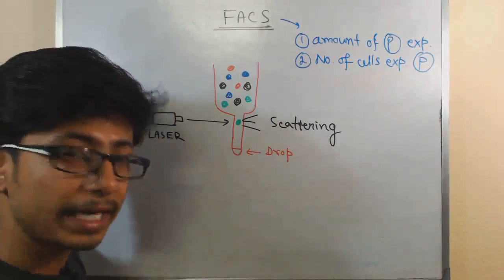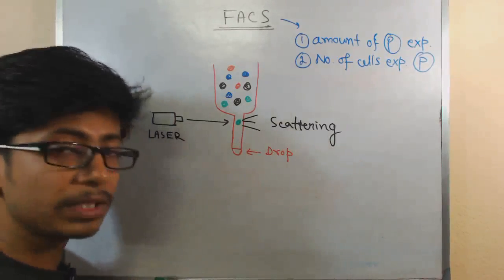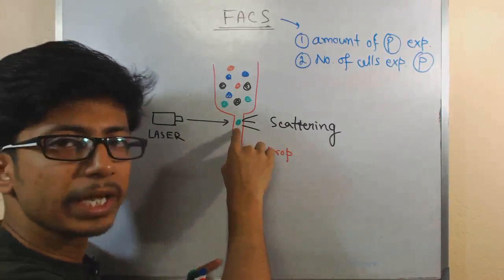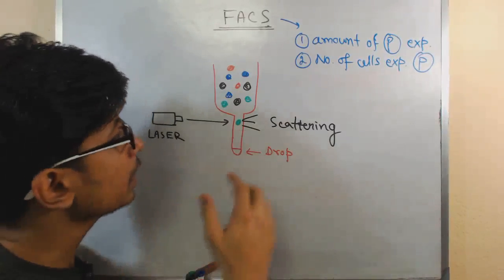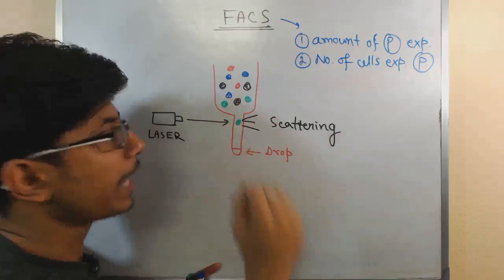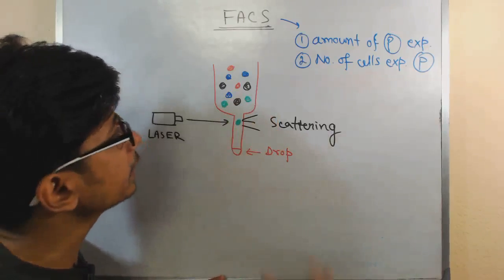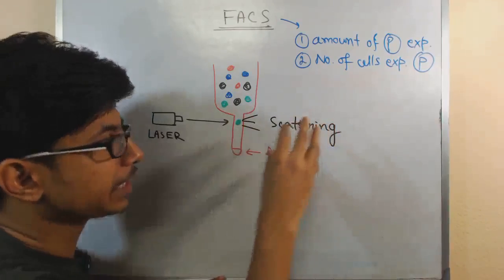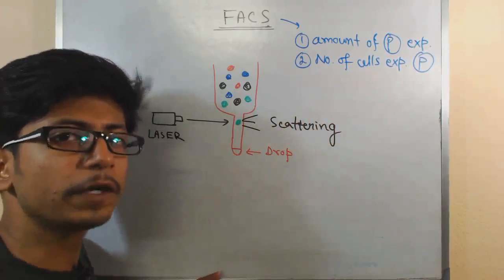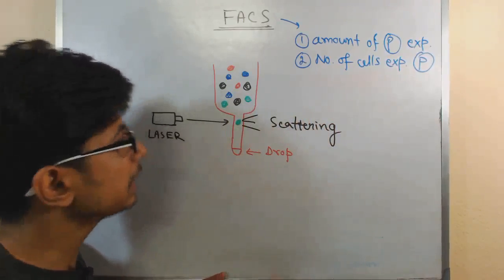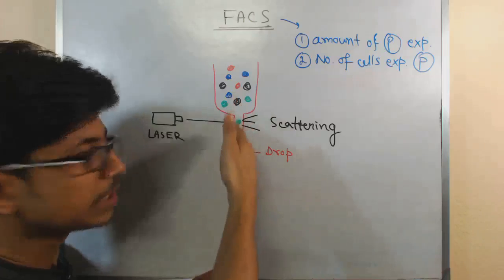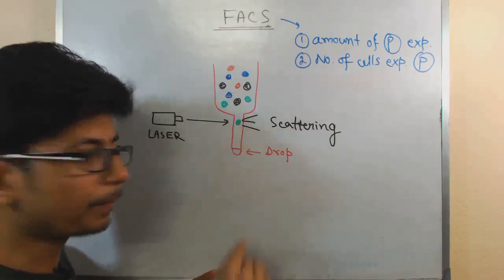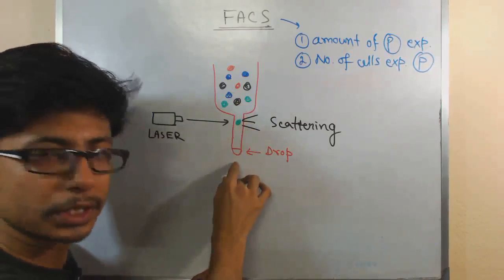The scattering of light varies from one type of cell to another. For the green type of cell the scattering is one amount; for the black type of cell the scattering will be different; for the blue one the scattering will be different. Scattering is a kind of signature mark for the different types of cells that are passing through this chamber, and then finally they are dropped into the drop section.